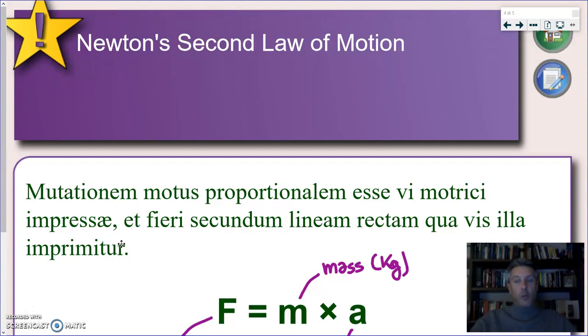So what he wrote is again in Latin, because he wrote his book in Latin, and this is what he said: Mutationem motus proportionalem esse vi motrici impresse, et firi secundum lineam rectam, qua vis illa imprimitur.